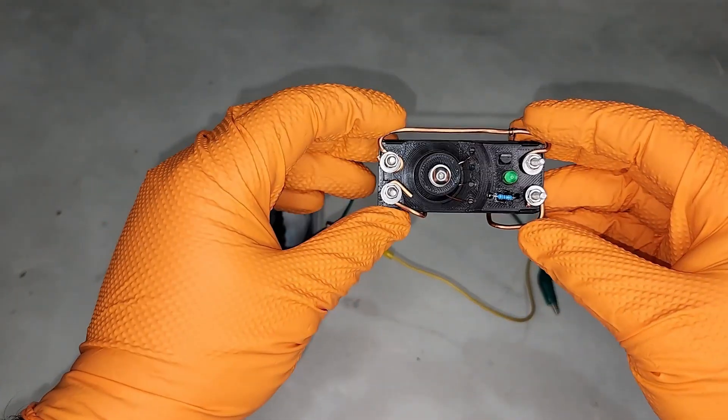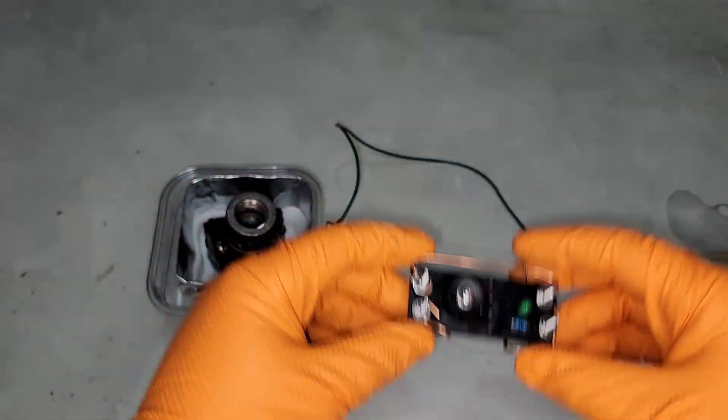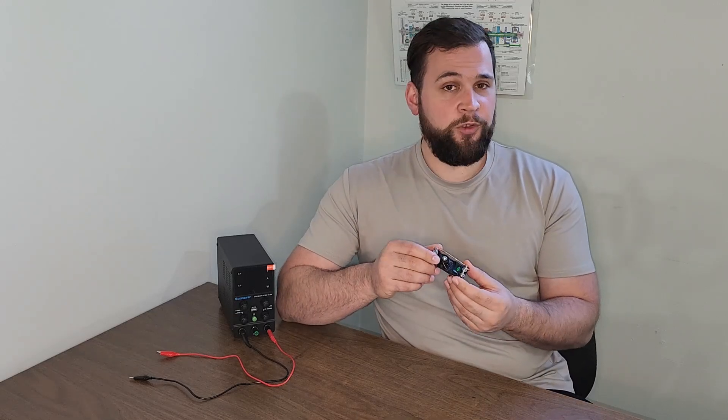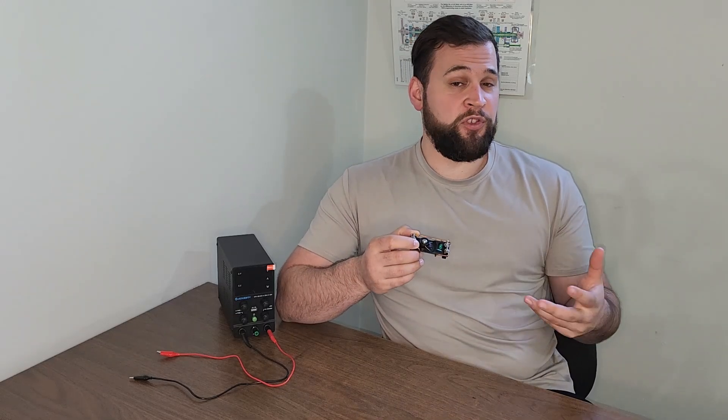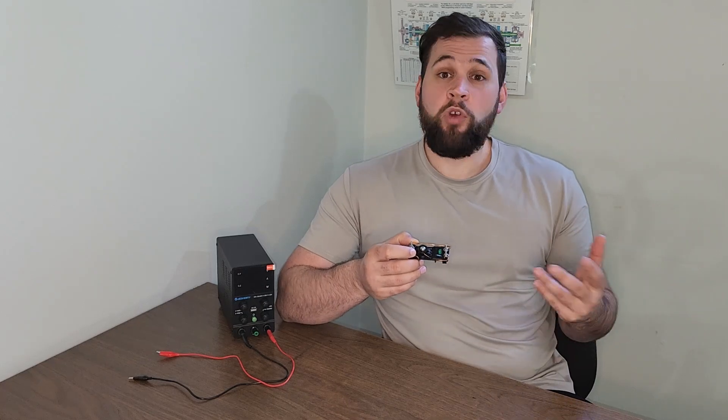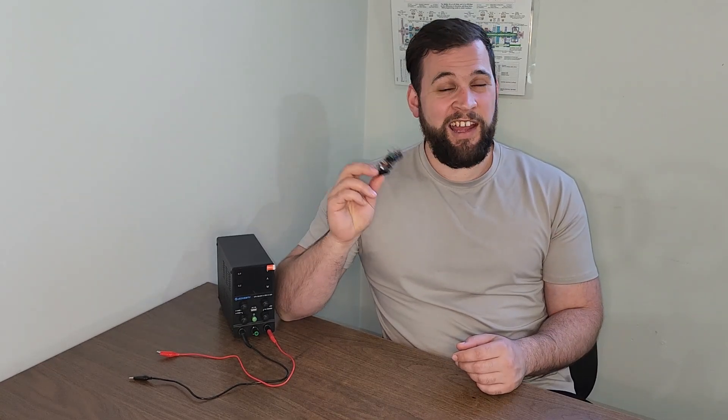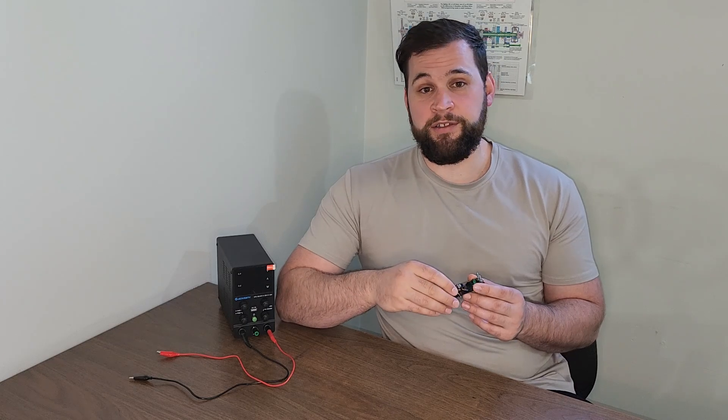A joule thief is a simple circuit. It can take low voltages, even voltages below one volt, and boost that voltage high enough so that it's actually able to produce some work, maybe like running an LED. Put simply, it's thanks to this little guy that I didn't have to make a whole bunch of battery cells and chain them all together.